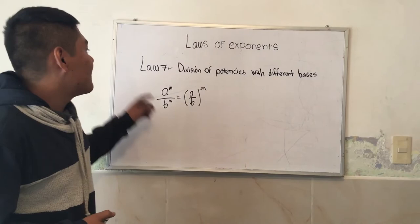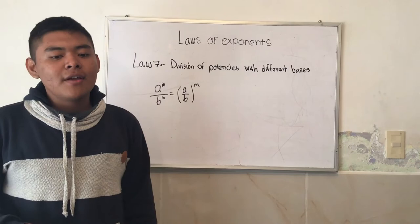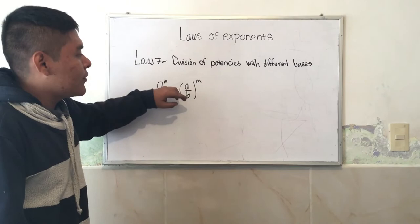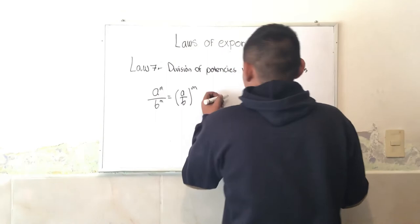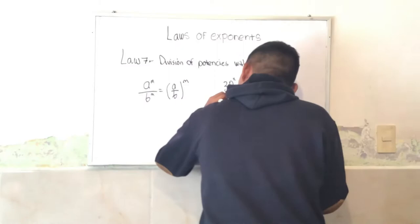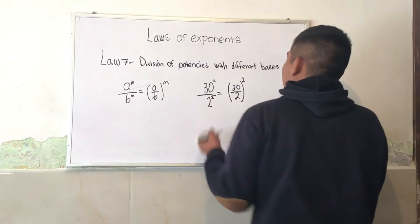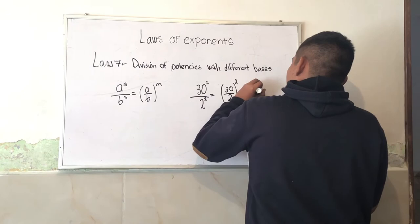Seventh law: division of potencies with different bases. If you have different bases but equal exponents, the bases are divided and the exponent is maintained. This is A to the M over B to the M is equal to A over B to the M. For example, we have 30 to the 2 over 2 to the 2 is equal to 30 over 2 to the 2, which is equal to 15 to the 2.